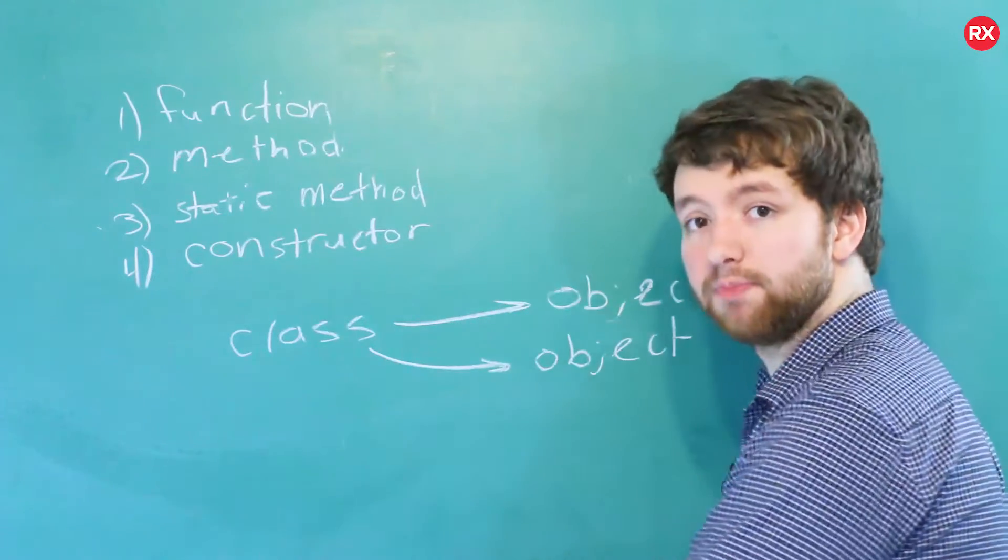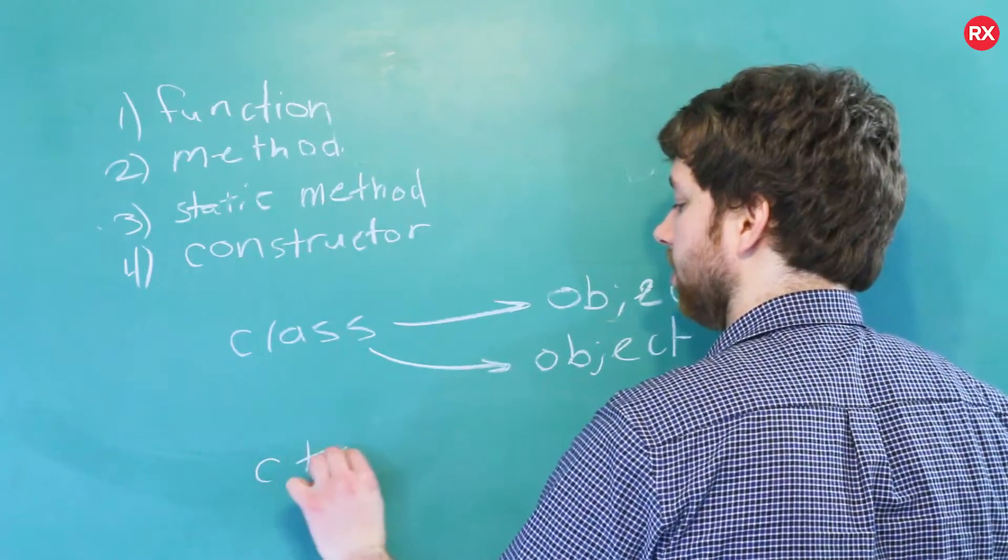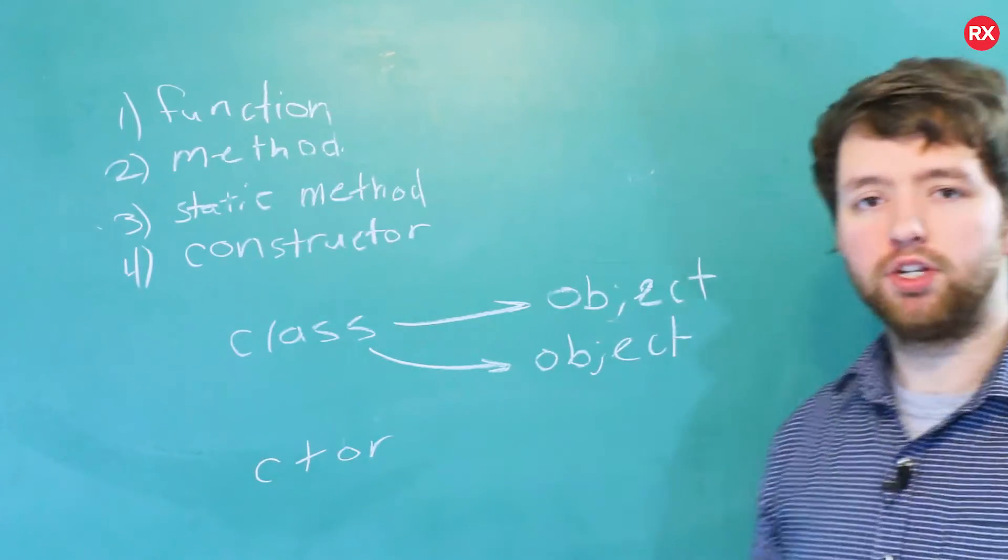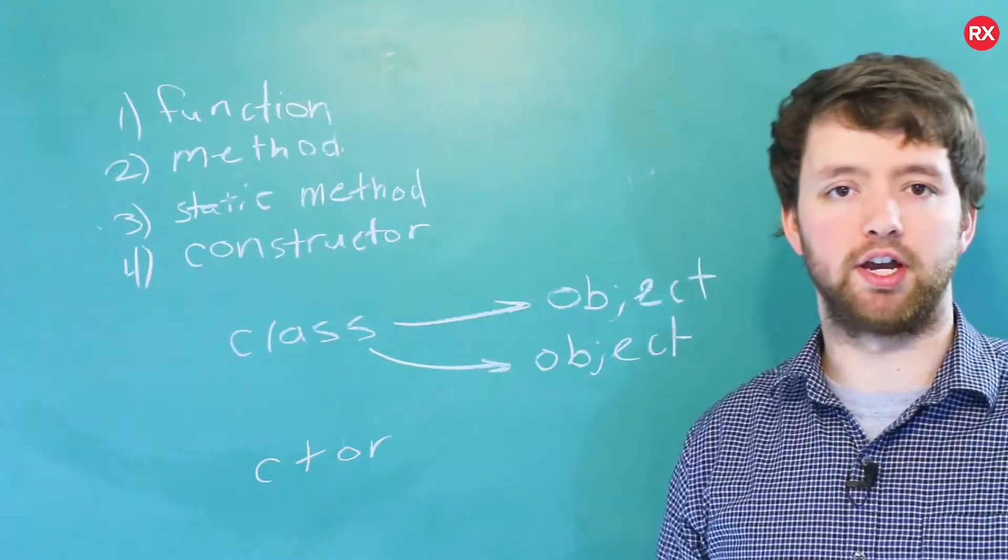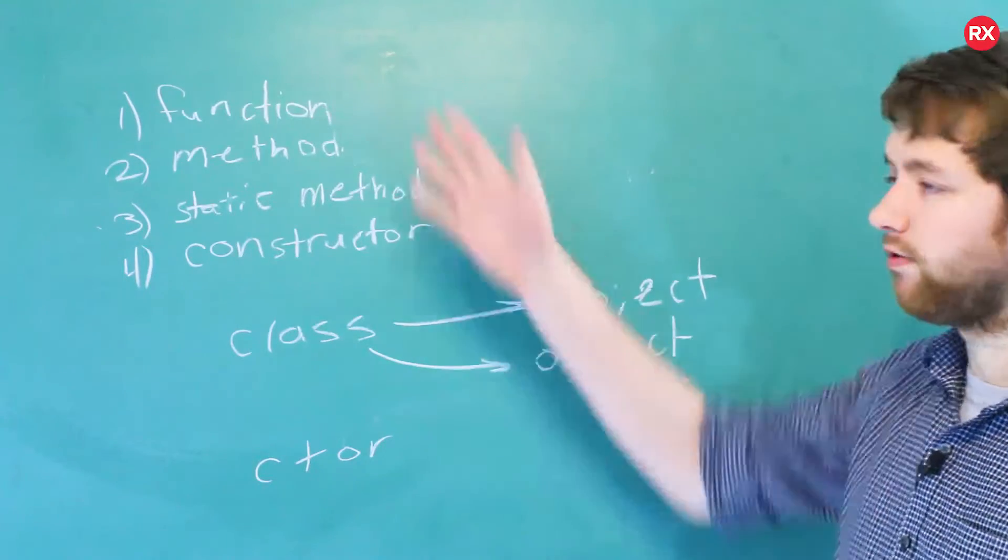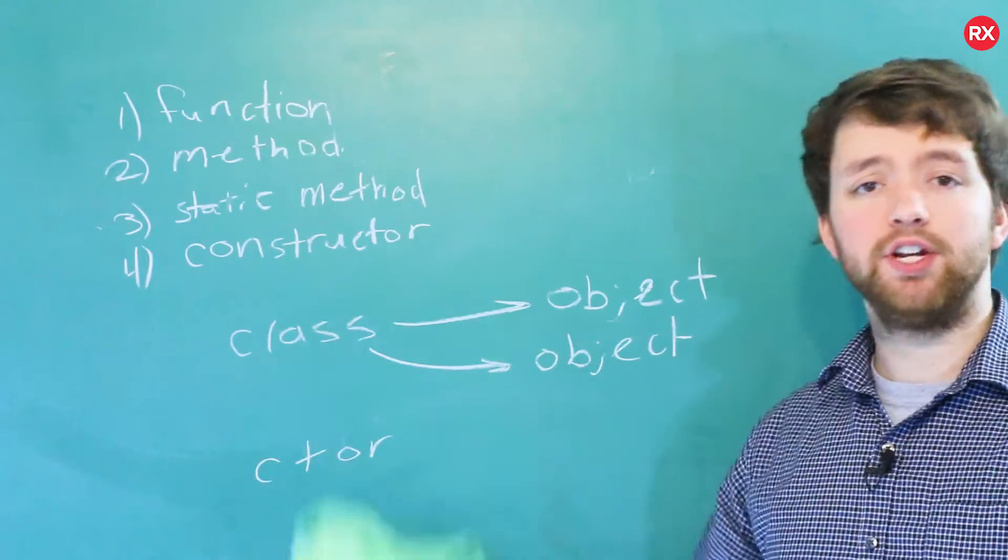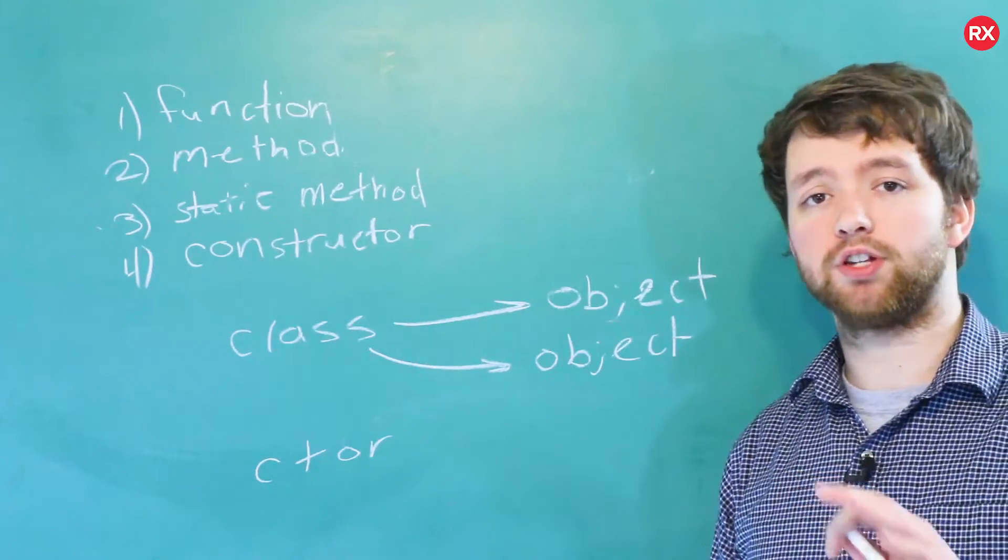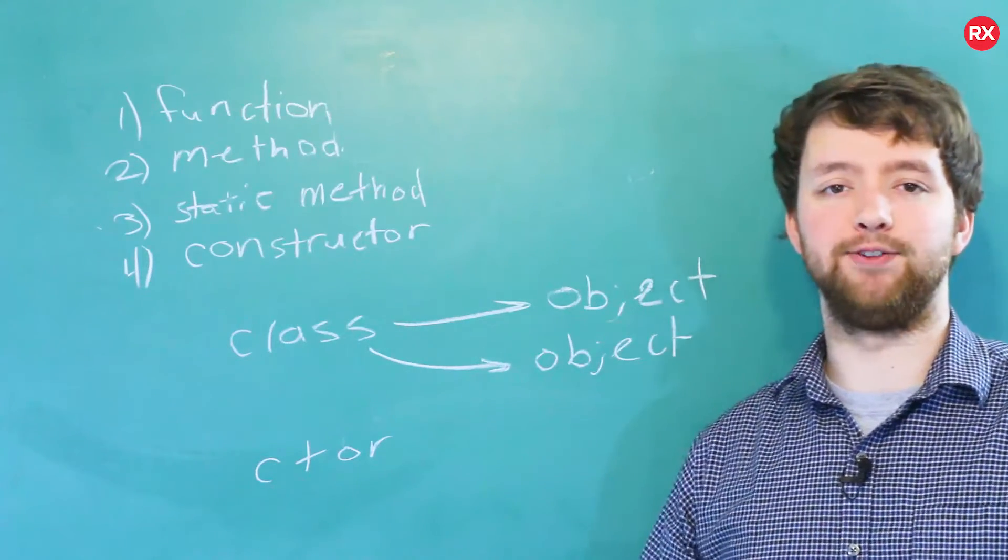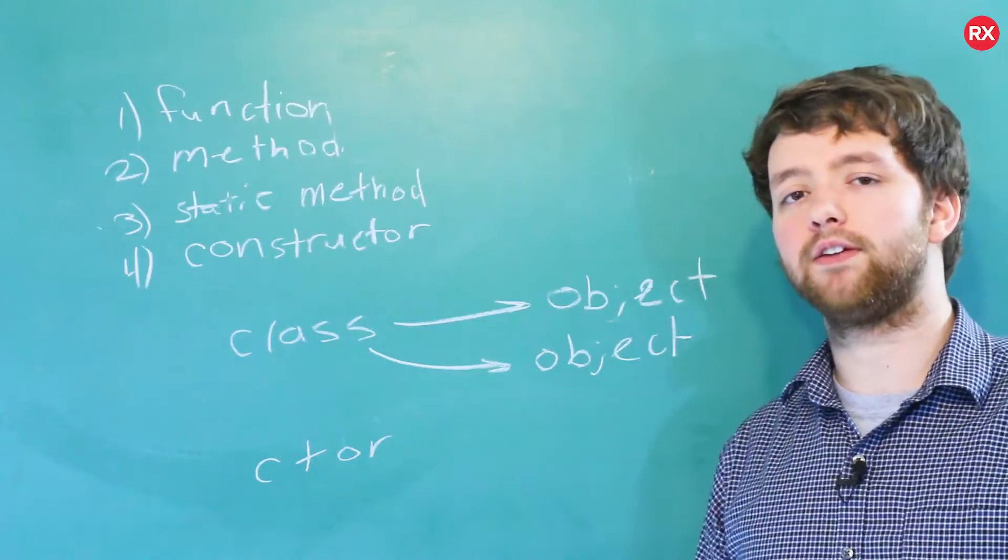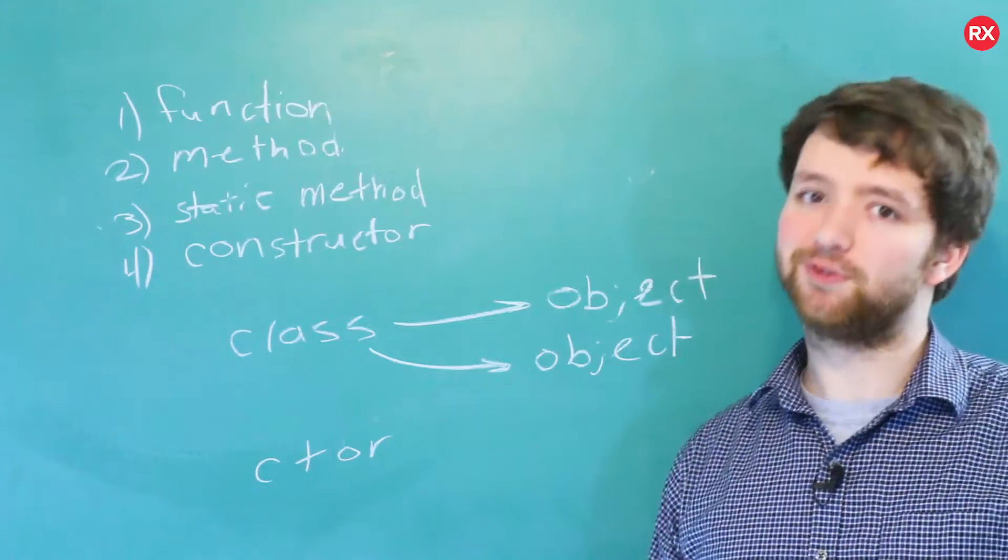When you create a class, you can create a special function called a constructor. You might see a shortened ctor or just constructor. And the only difference between a constructor and a normal function is that it doesn't have a return type. So a normal function can return a string, it can return an integer, or it could be void. With a constructor, it doesn't give any of those options. It's just a name. And the reason that is, is because it's not going to return any data. It's going to create a new object. So you can kind of think of it as always returning an object of a particular type.